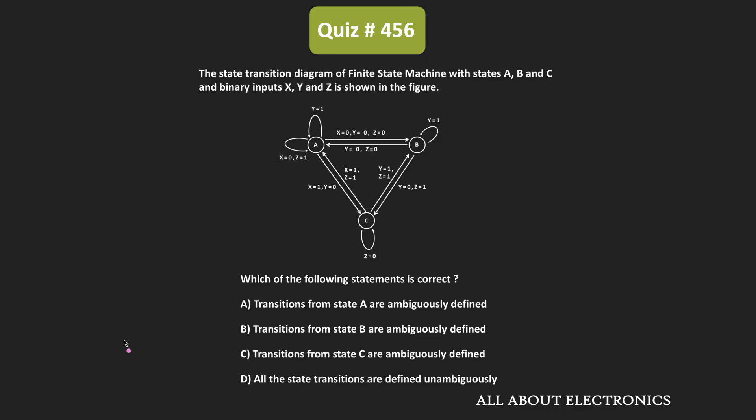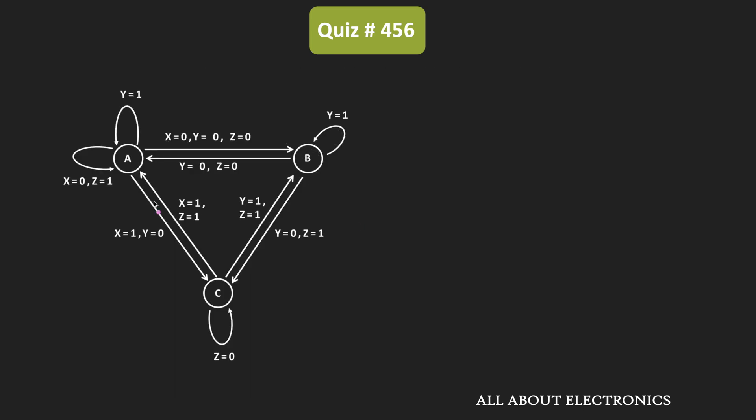Hey friends, welcome to the YouTube channel All About Electronics. So in this question, we have been given the state transition diagram and we have been asked to find if there is any ambiguity in the diagram or not. As you can see, we have three states: A, B, and C. And we also have three different inputs: X, Y, and Z.